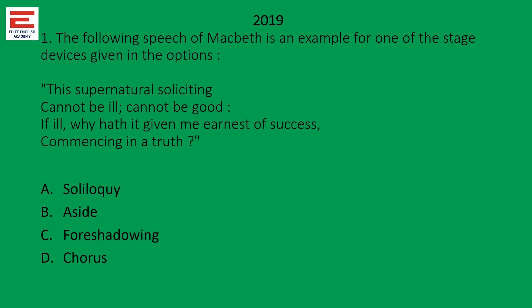First, let's discuss the questions from 2019. The following speech of Macbeth is an example for one of the stage devices given in the options: 'So this supernatural soliciting cannot be ill, cannot be good. If ill, why has it given me earnest of success? Commencing in a truth.' So from the question it is given — the question is from Macbeth, so one problem is solved. There are different techniques given as options.